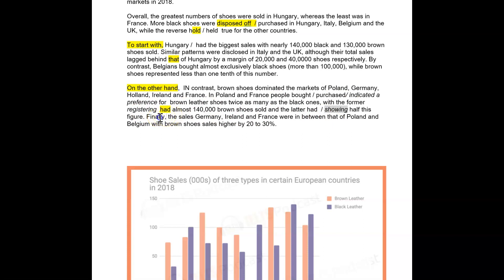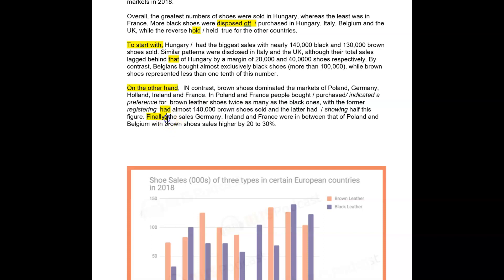Finally — again, I wouldn't use 'finally,' that's more for the task two, just go — sales in Germany, Hungary, and then France, Ireland and France, or Germans, Irish and French shoppers were in between that of Poland with brown shoes. Really good, I like how you've grouped these.